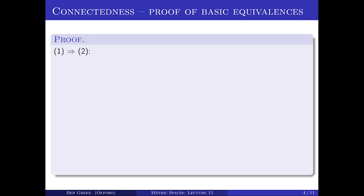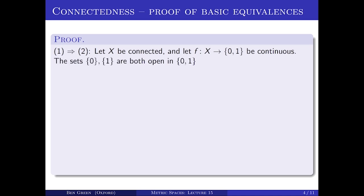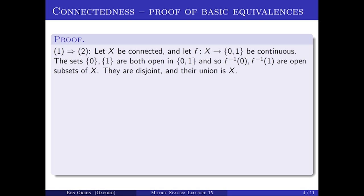Let's first prove that 1 implies 2: if X is connected, then any continuous {0,1}-valued function is constant. Let X be a connected space and suppose I have a continuous function F from X to {0,1}. The singleton sets {0} and {1} are both open sets in {0,1}, and the inverse image of an open set under a continuous map is open. Therefore F⁻¹(0) and F⁻¹(1) are both open subsets of X. They're disjoint and their union is the whole space X. Therefore, since X is connected, one of them must be empty, which means F is constant.